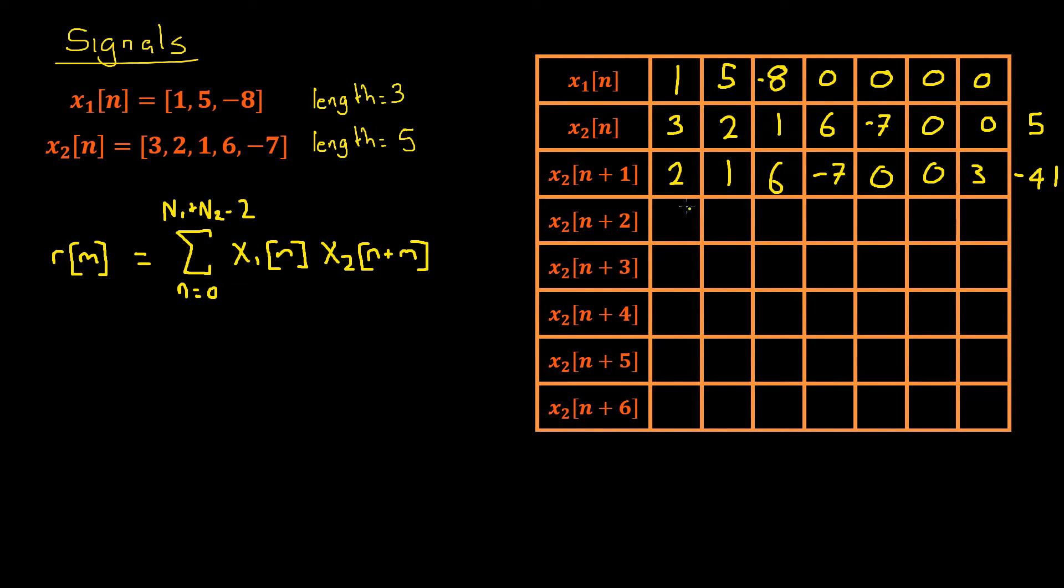Let's continue. We'll move it once more again to the left, and that will give us 1, 6, -7, 0, 0, 3, 2. Then let's multiply them again. 1 times 1 is 1, 5 times 6 is 30, that's 31, plus -8 times -7 is 56, plus 31, which will be 87.